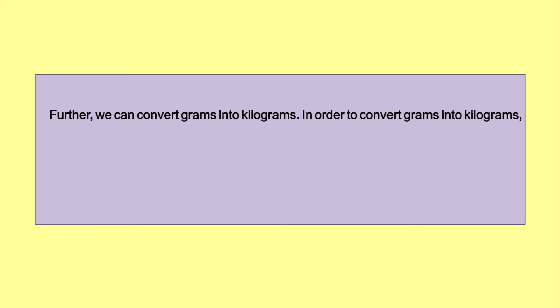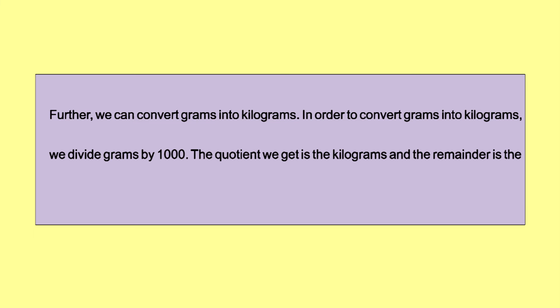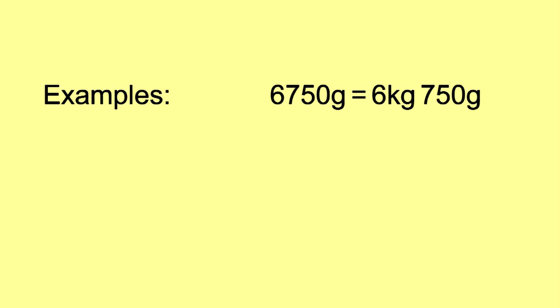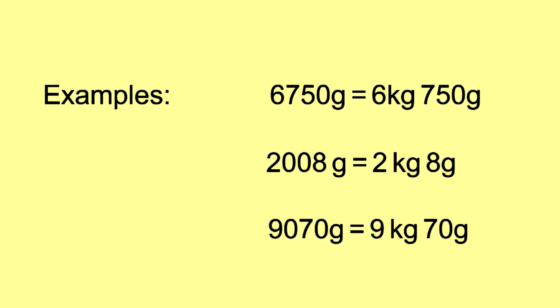We can also convert grams into kilograms by dividing grams by 1000. The quotient is the kilograms and the remainder is the grams. Alternatively, take the last three digits of the number as grams and the rest as kilograms. Example: 6750 grams = 6 kilograms and 750 grams. 2008 grams = 2 kilograms and 8 grams. 9,070 grams = 9 kilograms and 70 grams.